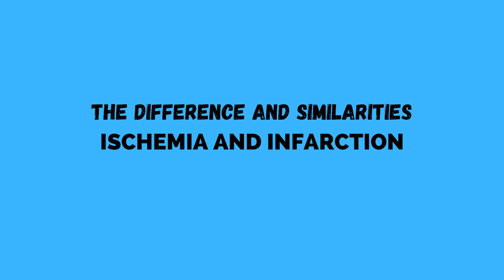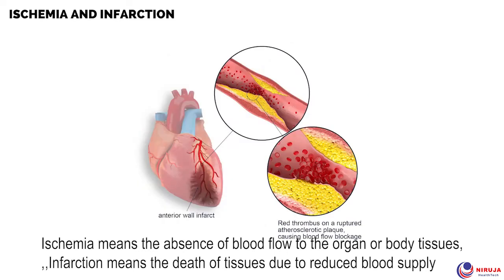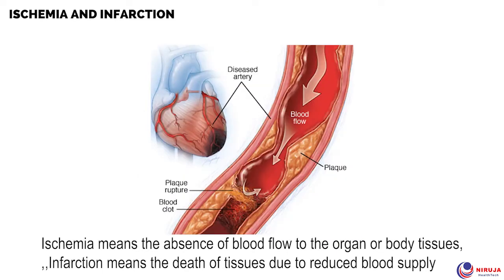The difference and similarities between ischemia and infarction: ischemia means the absence of blood flow to the organ or body tissues, while infarction means the death of tissues due to reduced blood supply. Reduced blood supply leads to a shortage of oxygen supply to the affected organ or body tissue.